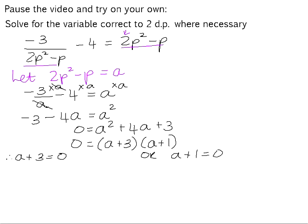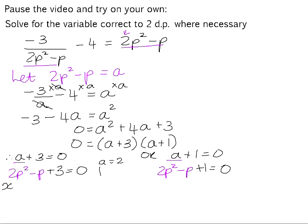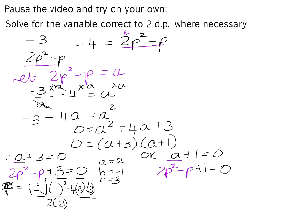We're not solving for a — we're solving for p. So we substitute 2p squared minus p back in place of a. The first equation becomes 2p squared minus p plus 3 equals 0. Using the quadratic formula with a equals 2, b equals negative 1, and c equals 3: p equals 1 plus or minus the square root of negative 1 squared minus 4 times 2 times 3, all over 2 times 2. The value under the square root is negative, so this equation has no real solution.